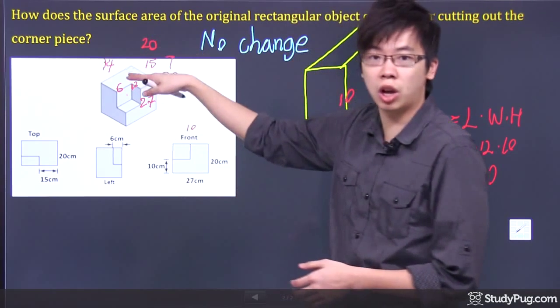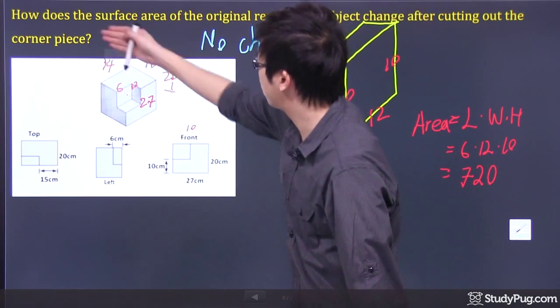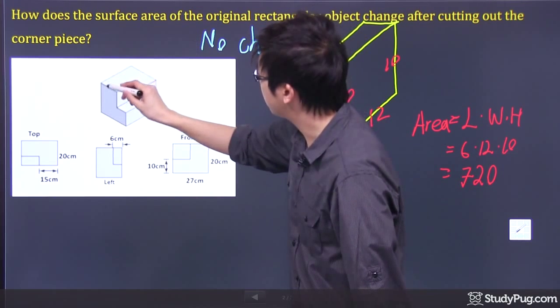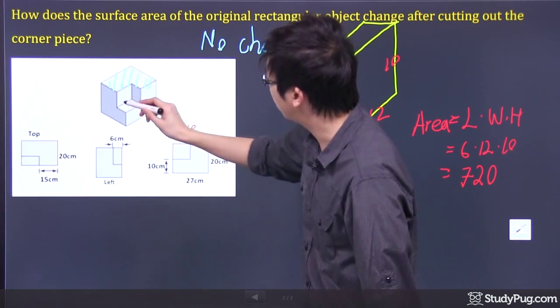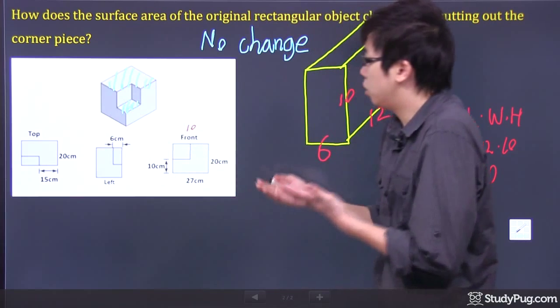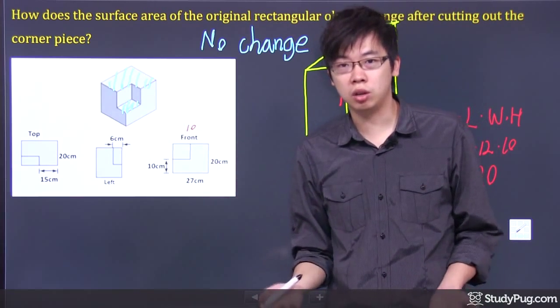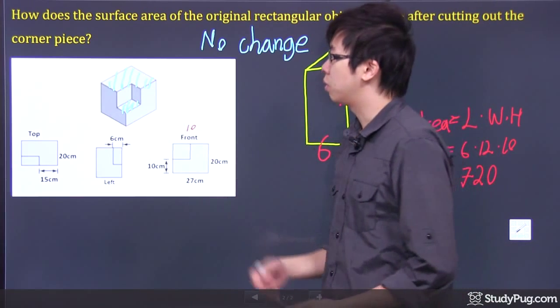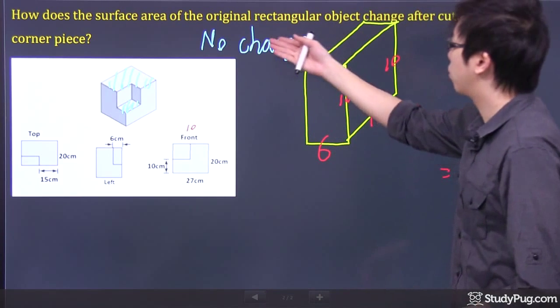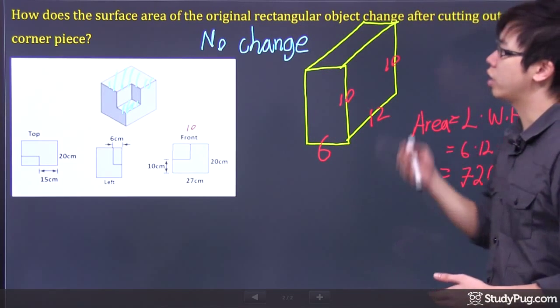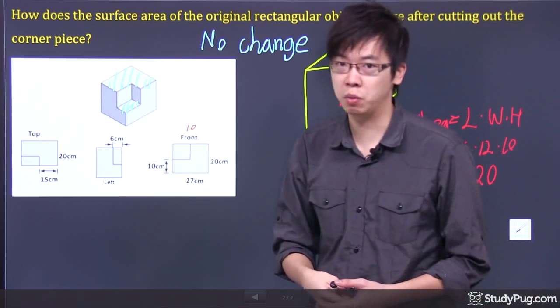Because when you're looking from, let's say if you're looking from the top, you still see the surface, you still see all this surface area, including that little piece down here. So the surface area actually didn't change from before and after. So that's why the surface area of the original rectangle object, it did not change even after you cut it out.